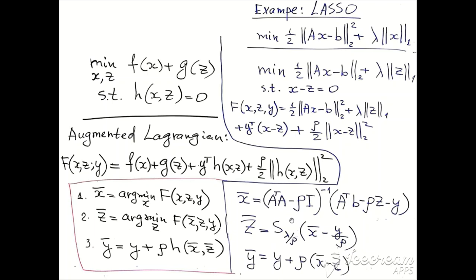The soft threshold function is defined here. After doing those two minimizations, we update our multipliers by the standard formula which is written here. The new y is the old y plus the penalty parameter multiplied by the vector of constraints.